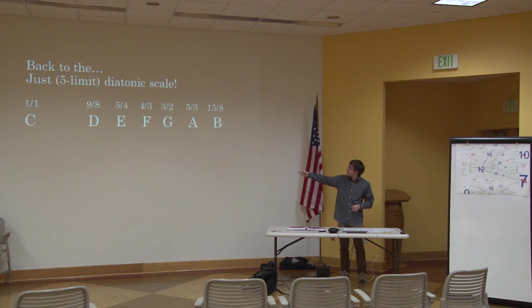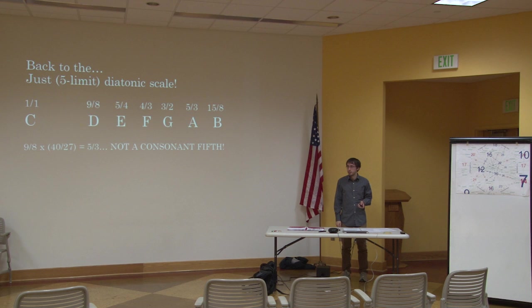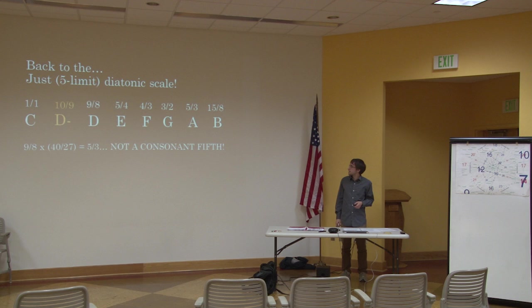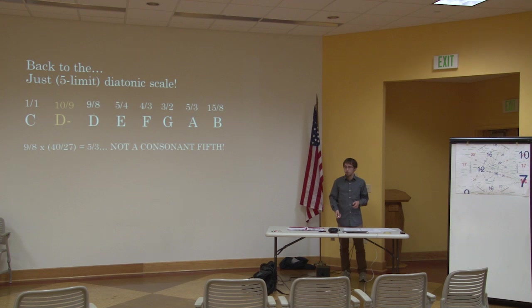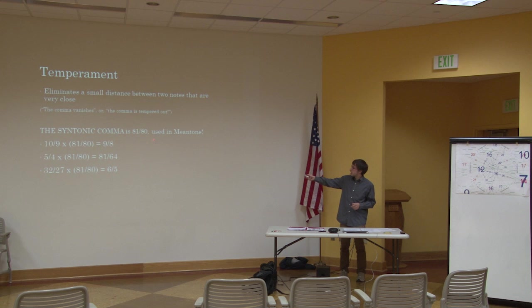Rank 2 temperaments are the most popular to discuss nowadays because it's fairly easy to specify a tuning system using just its generator and its period. The period is another name for the generator that acts as the octave. For every comma you temper out, the dimensionality is reduced by one. We had five-limit just intonation at rank 3, tempered out the syntonic comma, and got a rank 2 system — mean tone. Temperament has been modernized: you can take any number and temper out anything. For instance, you could use 'father temperament' and get rid of the diatonic semitone 16/15 to make E and F the same pitch.